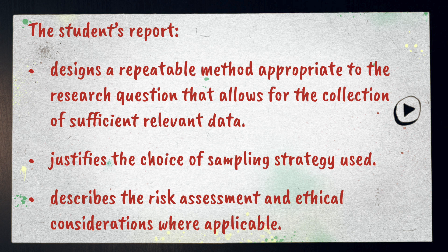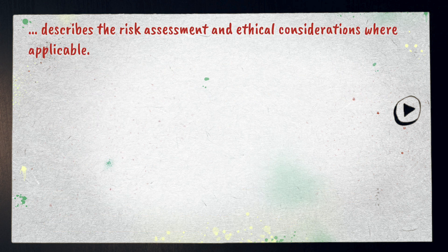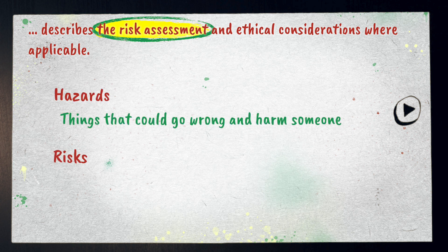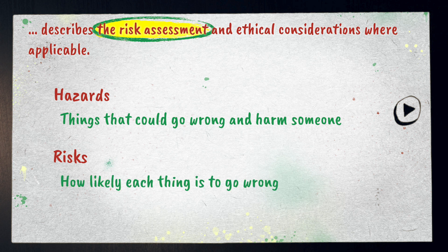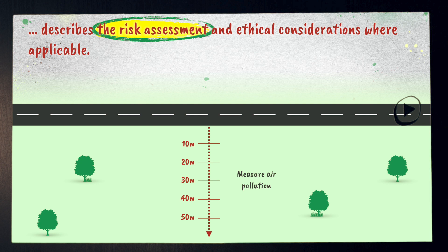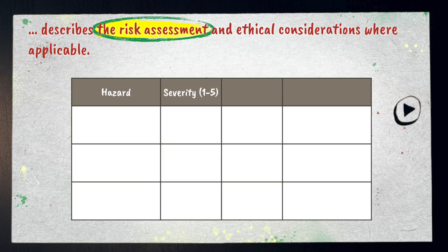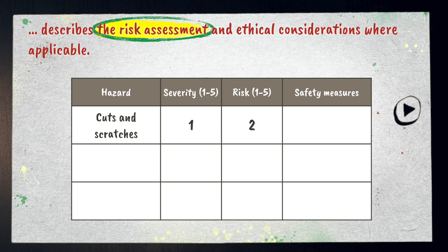The third step in the planning criteria is describing the risk assessment and ethical considerations where applicable. For the risk assessment, you need to think about the hazards — the things that could go wrong and harm someone — and the risks, which refers to how likely each thing is to go wrong. We'll consider an experiment where we want to collect air pollution samples at increasing distance from the road. List your hazards, consider how severe each one is and how likely it is to happen, then think about safety measures you can take to minimize the risk.